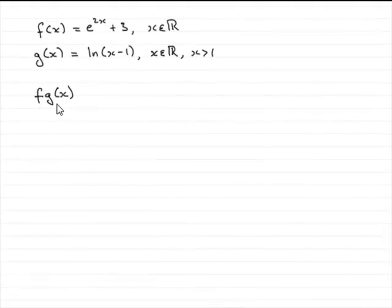Now to find the composite function fg of x, we've got our two functions here. What we've got to do is say that this is equal to f of g of x.